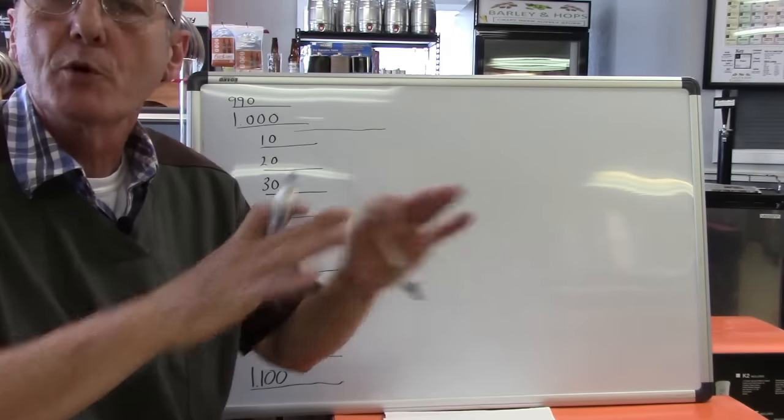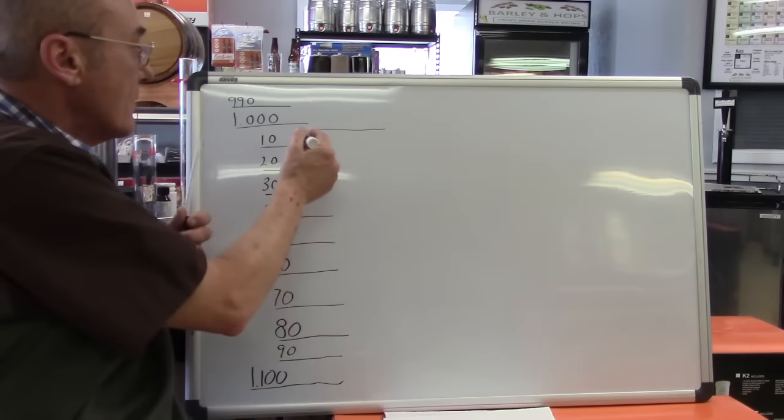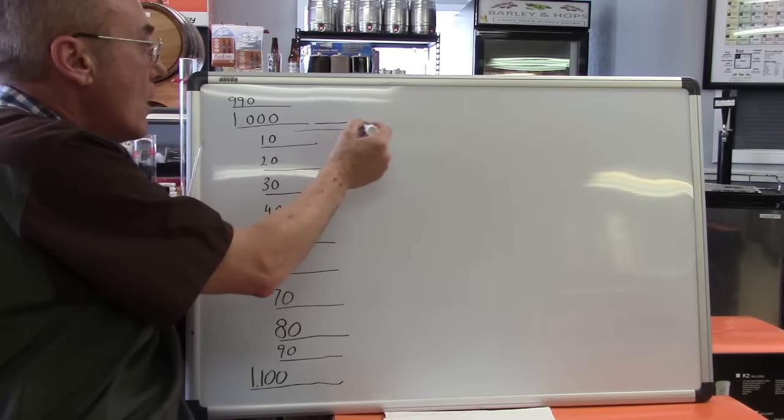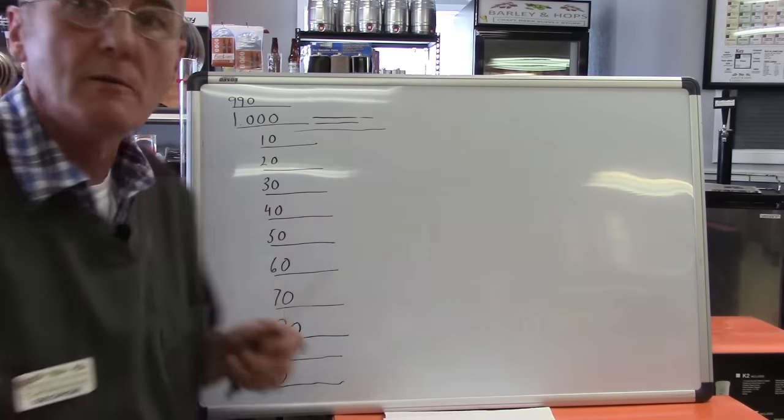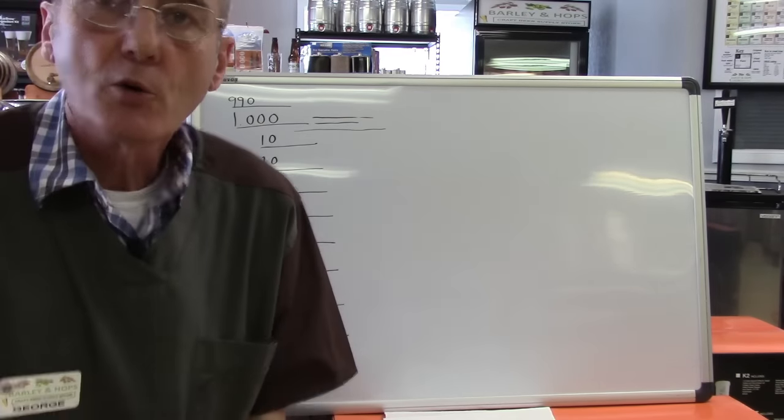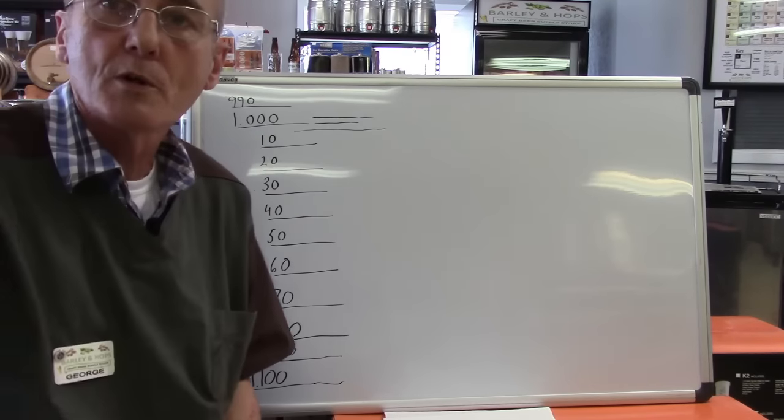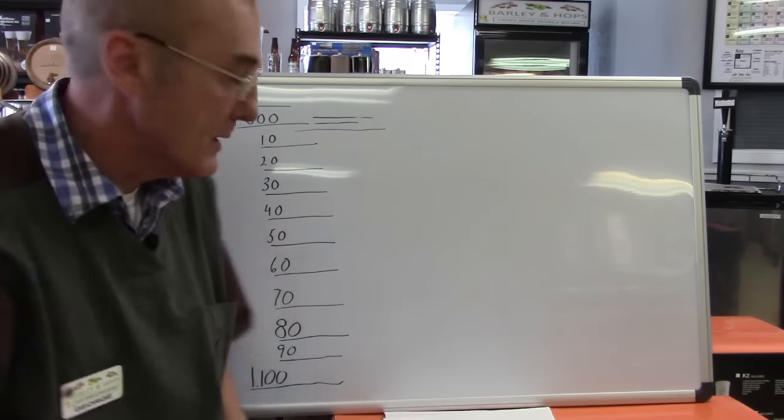If you're using a pure sugar wash, a sugar wash will ferment all the way down to one or just slightly below one. And that's fine. You'll know when it's done when it floats at that level, or when there's no more activity in your fermenter.